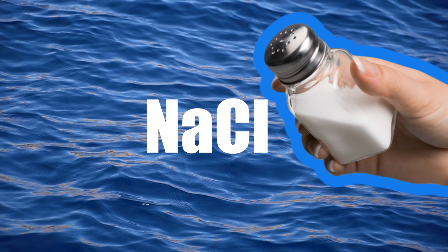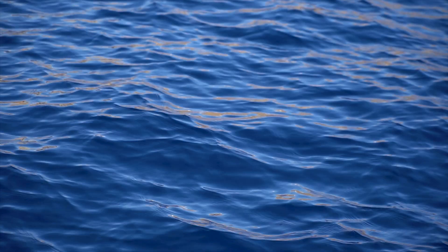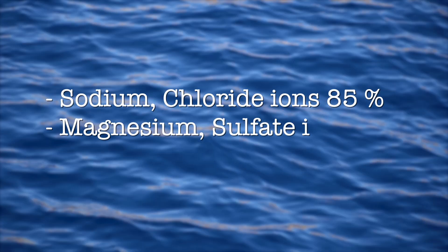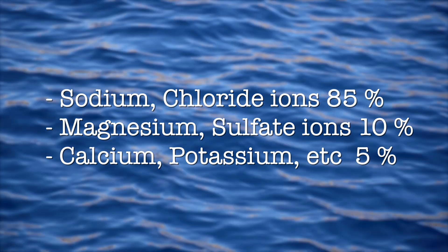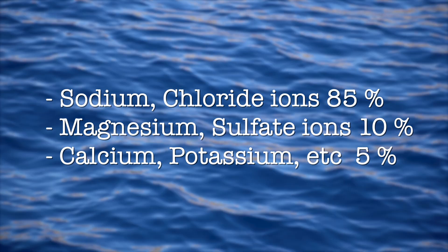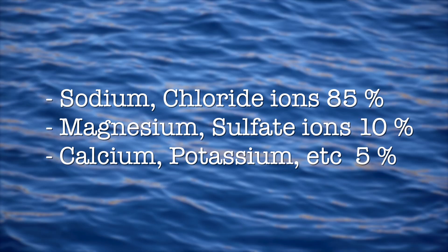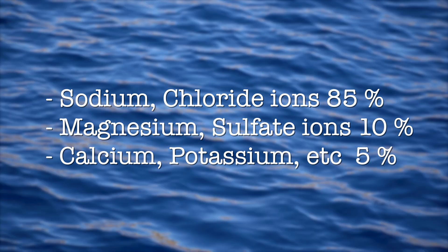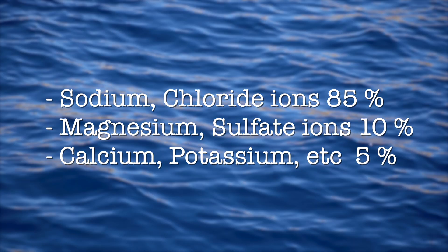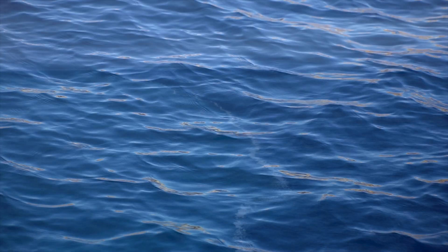Like other salts, sodium chloride dissolves in water into its ions — sodium and chloride ions. Together, they make up around 85% of all dissolved ions in the ocean. Magnesium and sulfate make up another 10% of the total. Other ions such as calcium and potassium are found in very small concentrations. The salinity of the ocean remains fairly constant over time, though it does differ slightly in different areas.